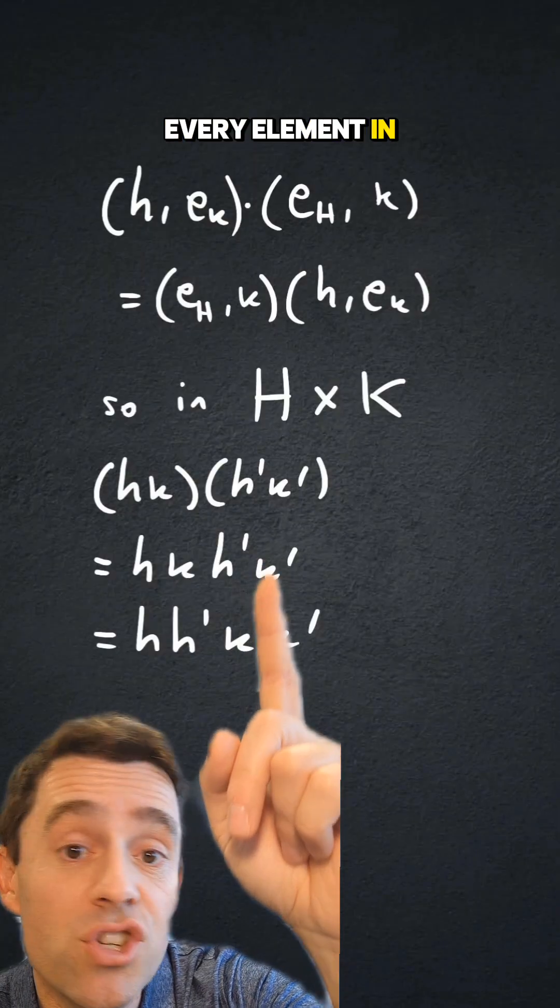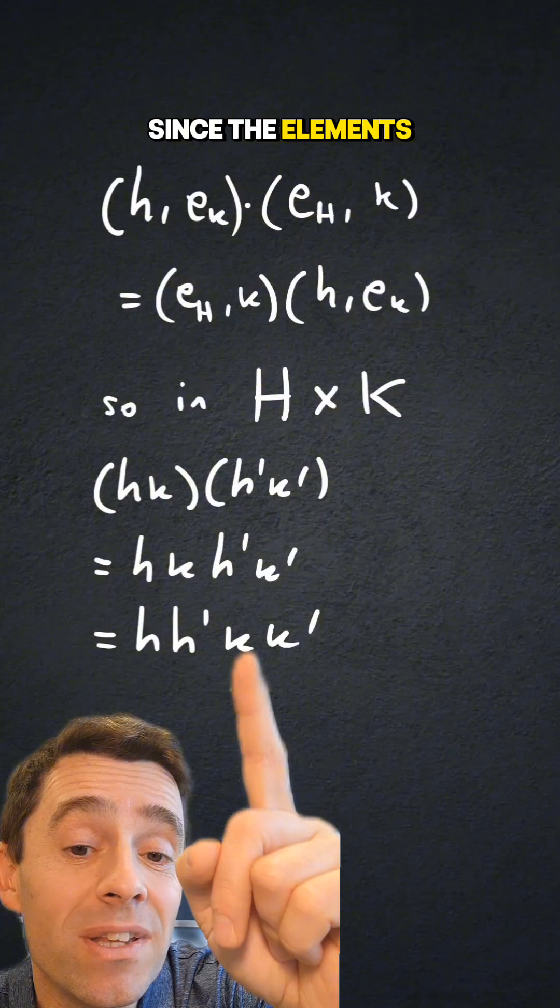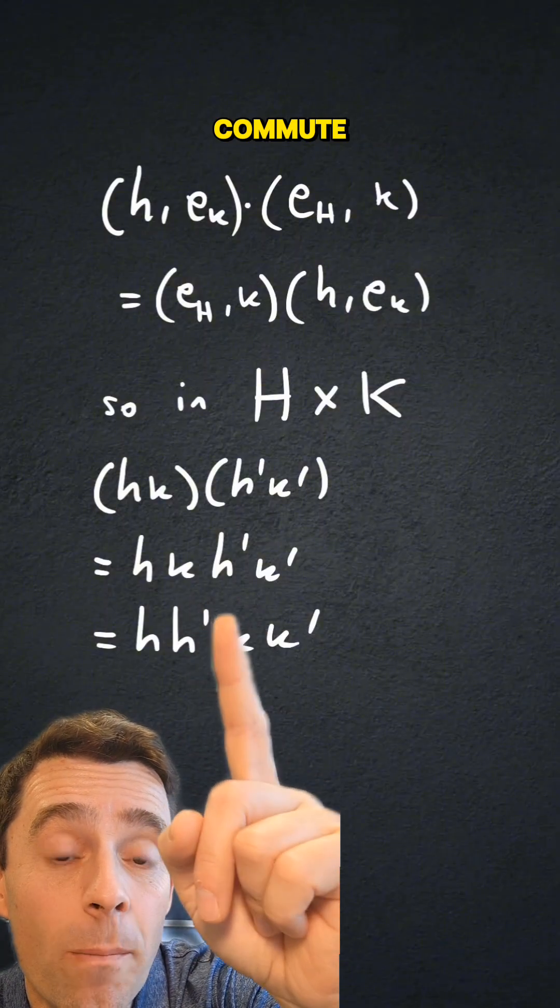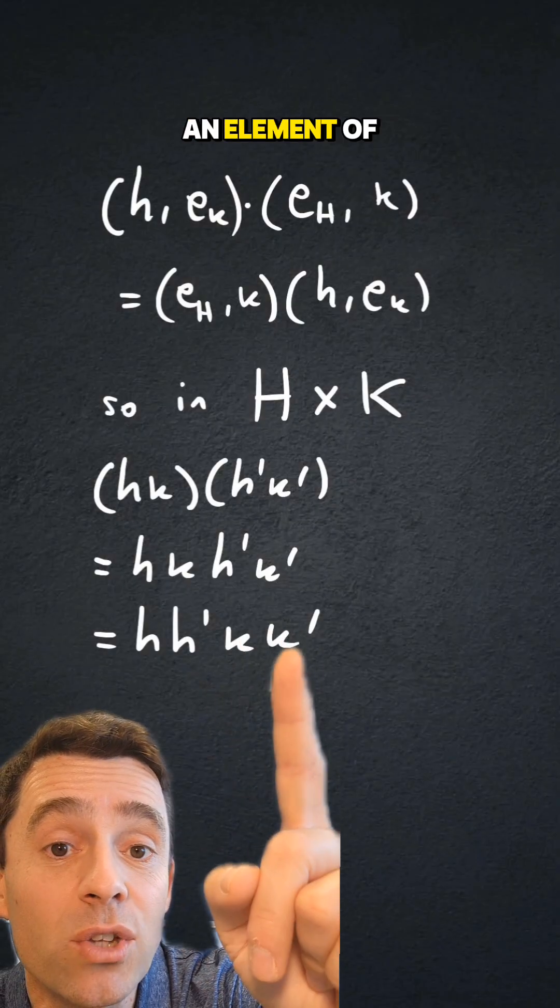every element in g prime will be some h prime k prime, and when I multiply them together, since the elements, the h's and the k's commute, I just have to bring this h to this side, and now I have an element of h and an element of k,